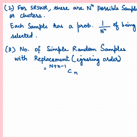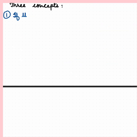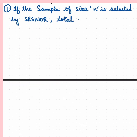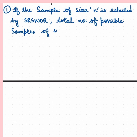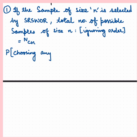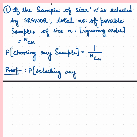Now we will understand three major concepts. Concept one: if a sample of size n is selected by SRSWOR, then the total number of possible samples of size n, ignoring order, equals N choose n. Hence, the probability of choosing any particular sample equals 1 upon N choose n.